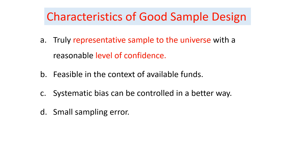The second characteristic is that it should be feasible in the context of available funds. That means our resources — the capital and the time — should be adequate to conduct that sample. The third characteristic is that systematic bias can be controlled in a better way and sampling error should be minimized. We will discuss systematic bias and sampling error in the upcoming slides.